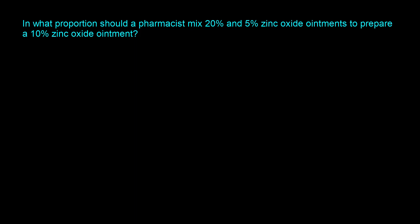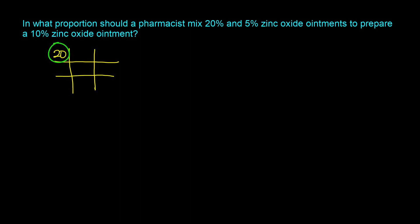This question says: in what proportion should the pharmacist mix 20% and 5% zinc oxide ointments to prepare a 10% zinc oxide ointment? Let's start off by setting the allegation grid. The higher concentration goes into the top left corner, the lower concentration goes into the bottom left, and your desired concentration goes into the middle. So 20% goes to the top left, 5% goes to the bottom left, and 10% goes in the middle.